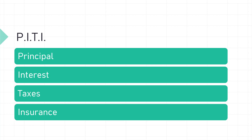Next, we have the T part of the P-I-T-I: taxes. That is the monthly amount placed in an escrow account to pay real estate taxes when they become due. One-twelfth of the estimated tax payment will be placed in the escrow account every month.